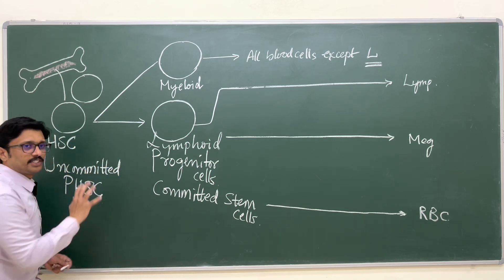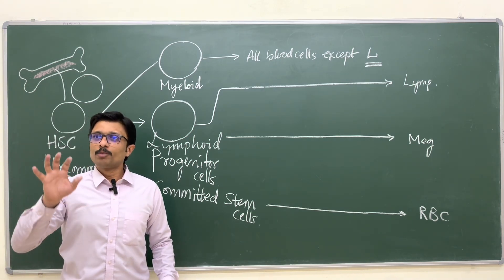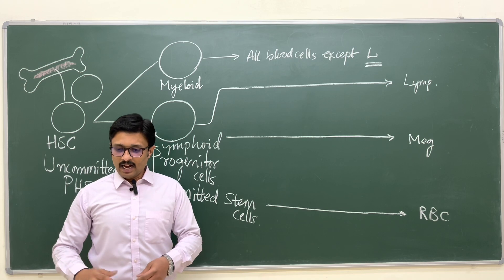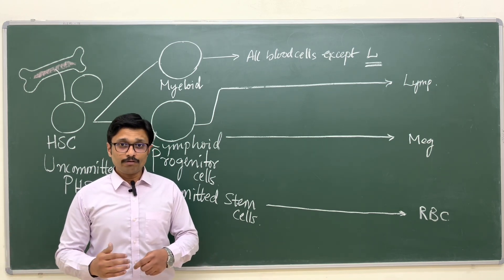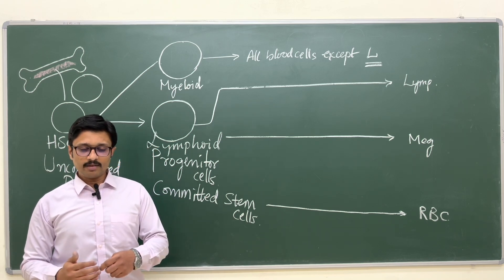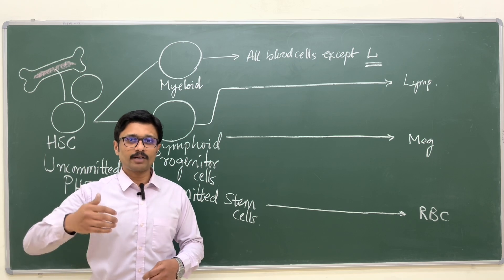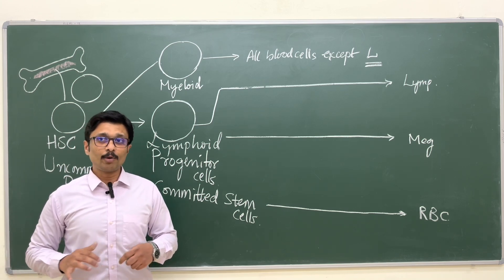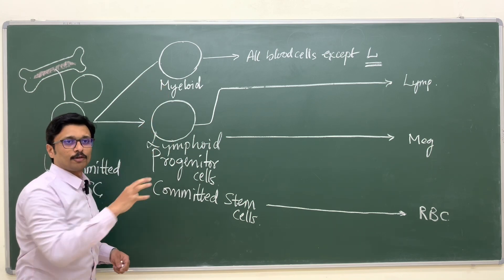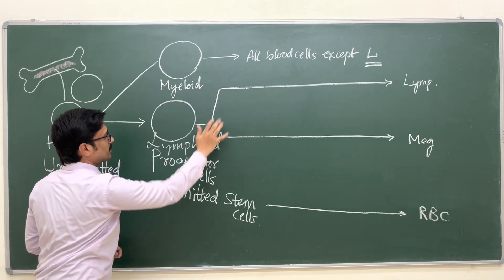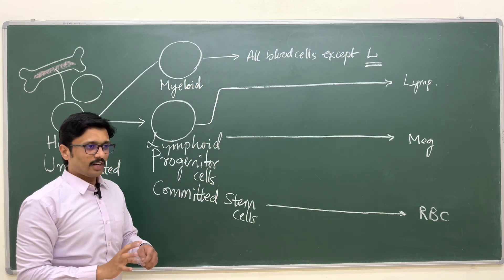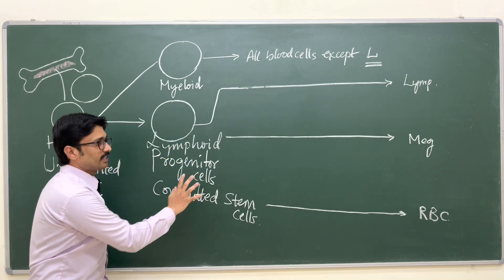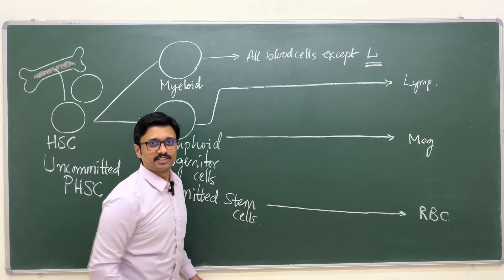There are many pluripotent hemopoietic stem cells in the bone marrow with two key properties: self-replication, meaning they can multiply and increase their colony, and differentiation, meaning they transform into a new type of cell. The new cells differentiated from uncommitted pluripotent hemopoietic stem cells are progenitor cells. The myeloid progenitor gives rise to all blood cells except lymphocytes; the lymphoid progenitor gives rise to lymphocytes.